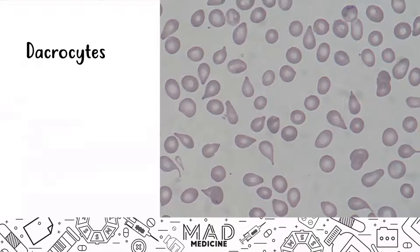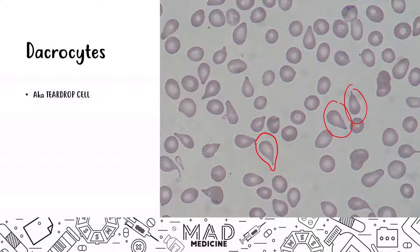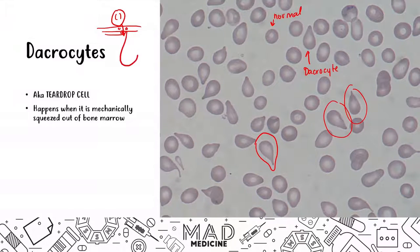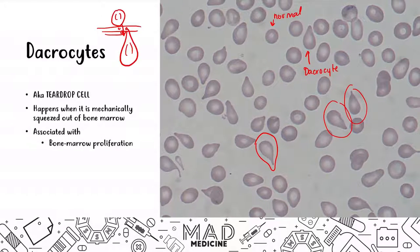Dacrocytes are also known as teardrop cells. This happens when you mechanically squeeze a red blood cell out of the bone marrow through the pores, giving it that teardrop shape. Why would you be squeezing red blood cells out of the bone marrow? It's because of states in your body where you're going to have bone marrow proliferation. Dacrocytes are associated with bone marrow proliferation as well as thalassemia.